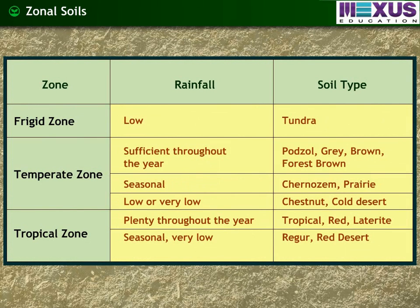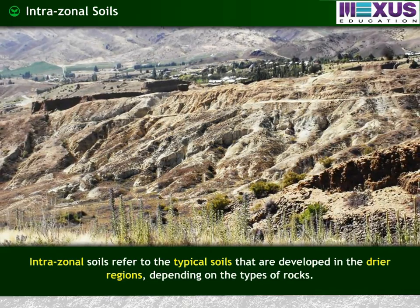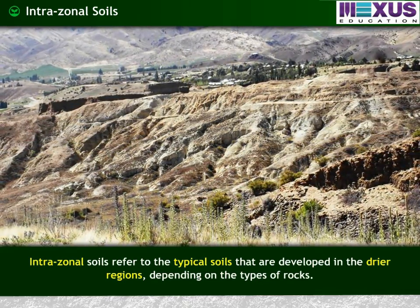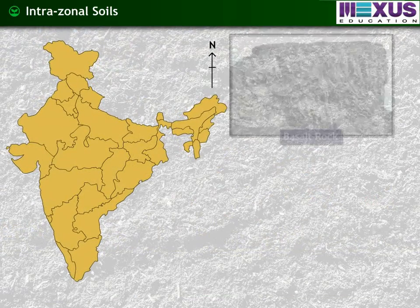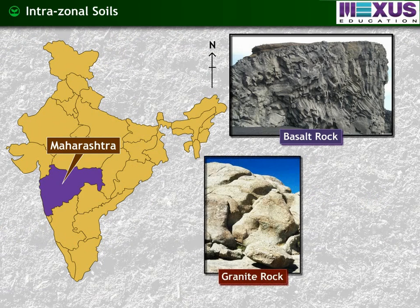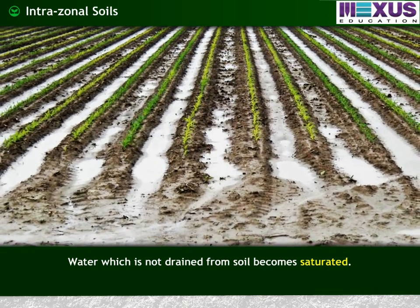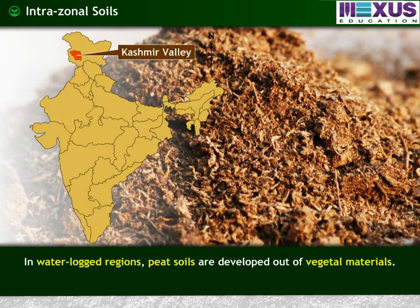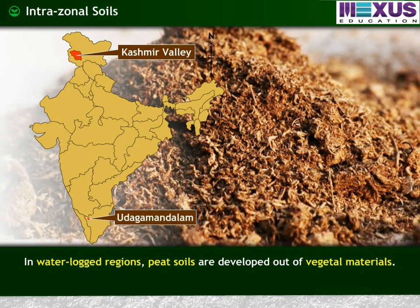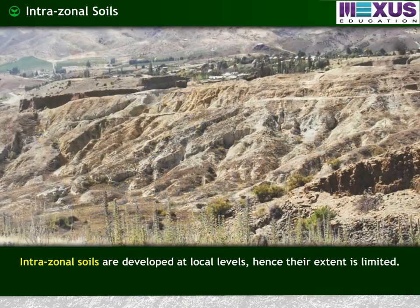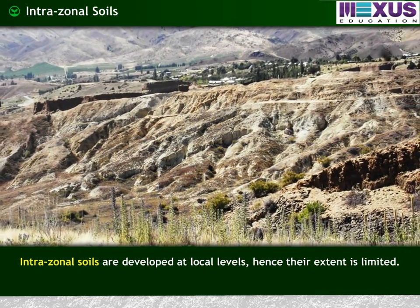Let us understand the distribution of zonal soils from the following table. Intrazonal soils are typical soils developed in drier regions depending on the types of rocks. The soil developed on basalt rock in Maharashtra, or the red soil developed on granite and gneiss rocks in South India, are examples of intrazonal soils. In waterlogged regions of the Kashmir Valley and Udagamandalam, peat soils are developed out of vegetal materials. Intrazonal soils are developed at local levels, hence their extent is limited.